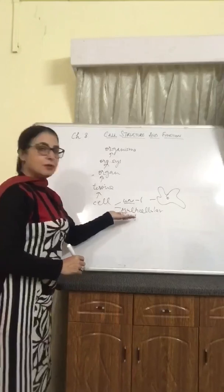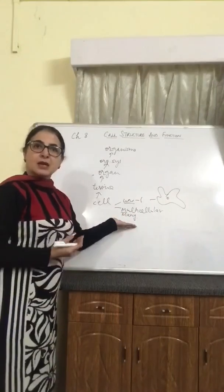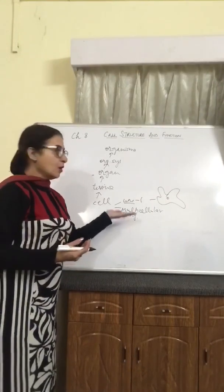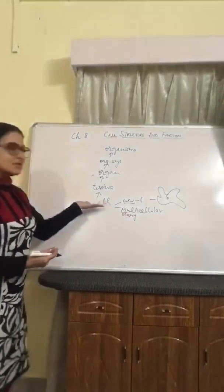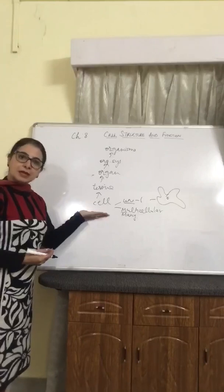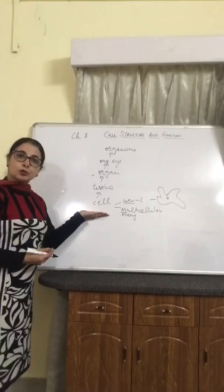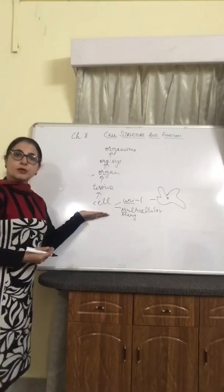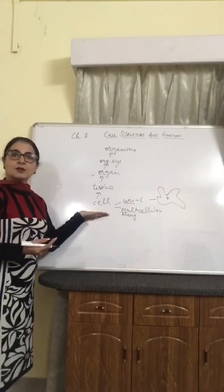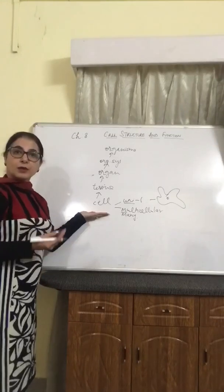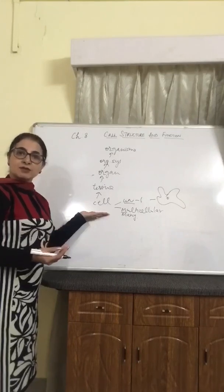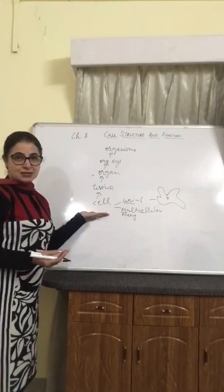There are organisms like human beings, plants, and animals which are made up of many cells. These cells may be of different sizes. The smallest are PPLO — pleuropneumonia-like organisms — which are 0.1 micrometres. The ostrich egg cell is very big; it is a single cell but 107 mm in size, so it is the biggest cell.